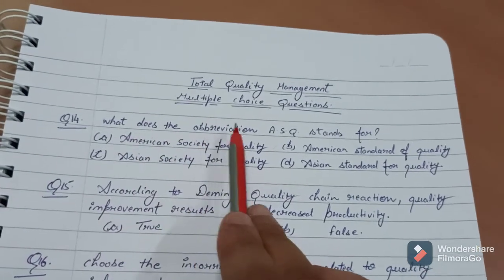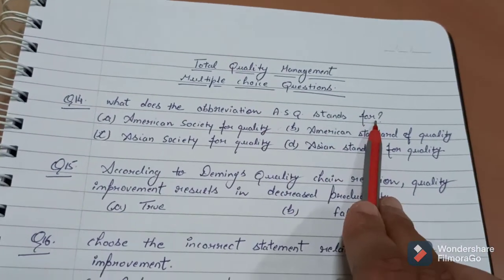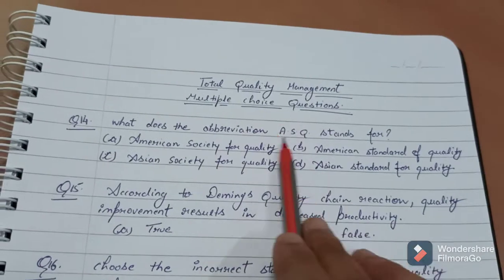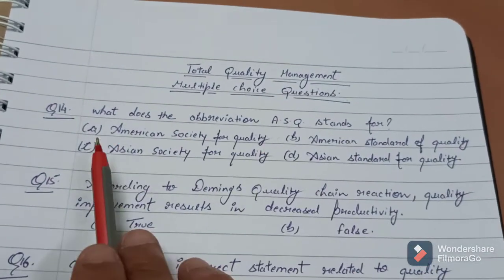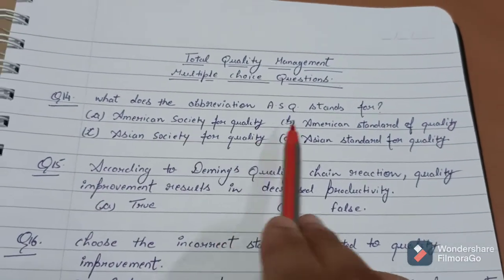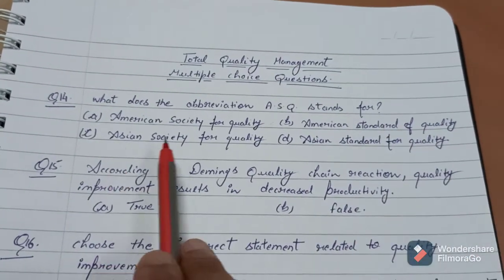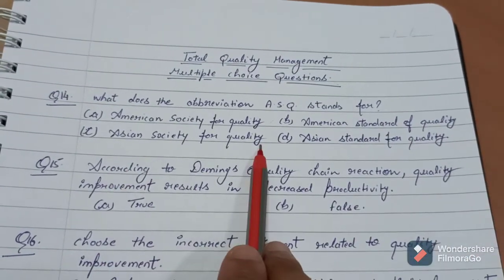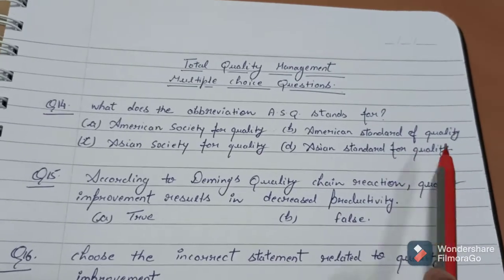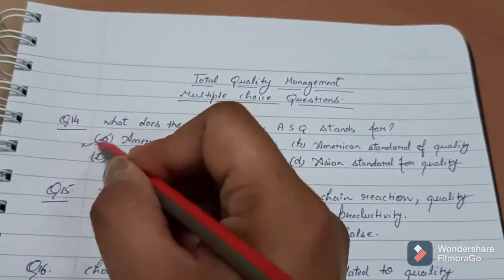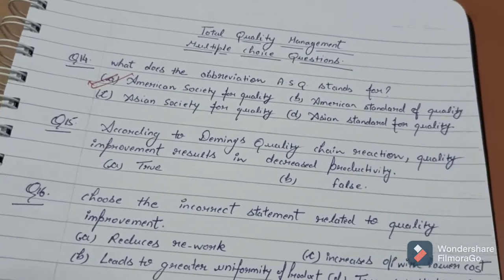What does the abbreviation ASQ stand for? ASQ ka full form kya hota hai? The options are: American Society for Quality, American Standard of Quality, Asian Society for Quality, or Asian Standard for Quality. The answer to the question is American Society for Quality.